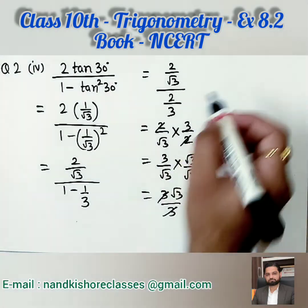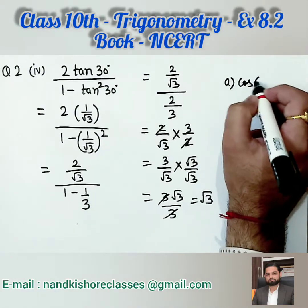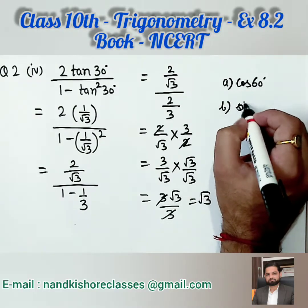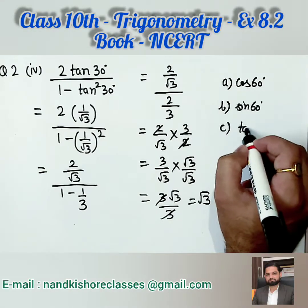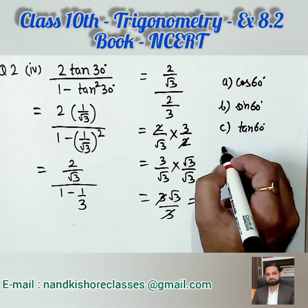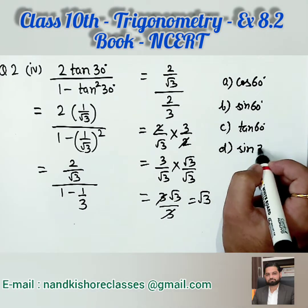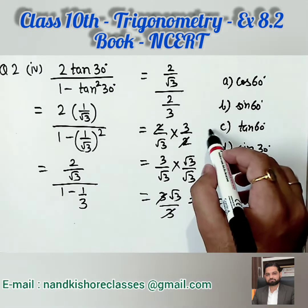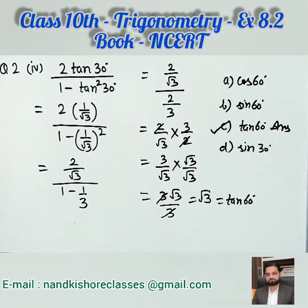Now what are the 4 options? Option 1 is cos 60 degrees, Option 2 is sin 60, Option 3 is tangent 60, and Option 4 is sin 30 degrees. The value root 3 corresponds to tangent 60 degrees. So the answer is tangent 60. I hope you are clear with all the parts of question number 2.